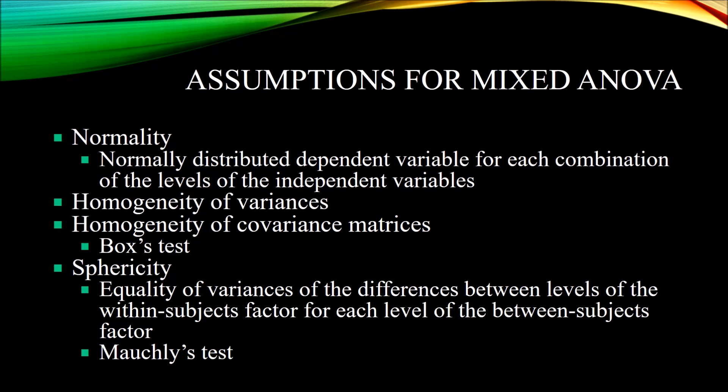The assumption of homogeneity of covariance matrices is often tested with Box's test. The last assumption for a two-way mixed ANOVA is sphericity, which means equality of variances of the differences between the levels of the within-subjects factor for each level of the between-subjects factor. Mauchly's test is often used to test the assumption of sphericity. I hope you found this introduction to two-way mixed ANOVA useful — thanks for watching.